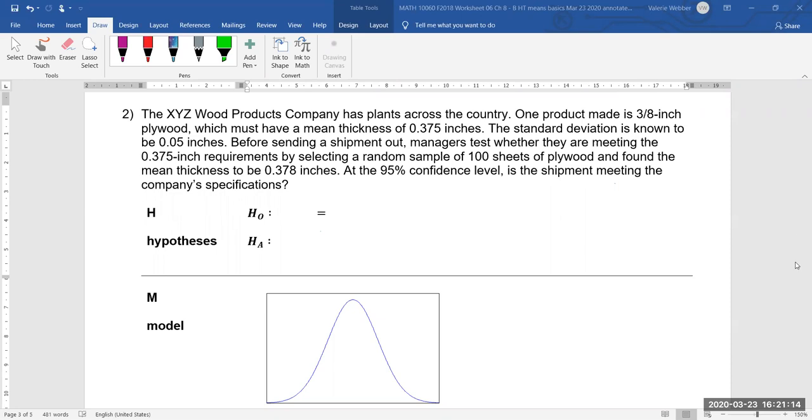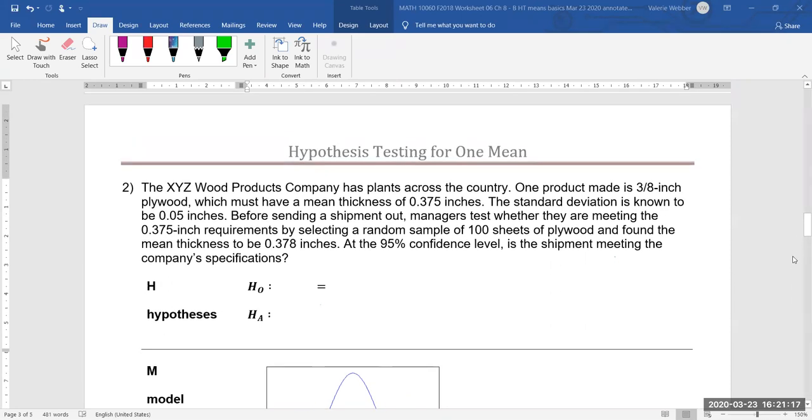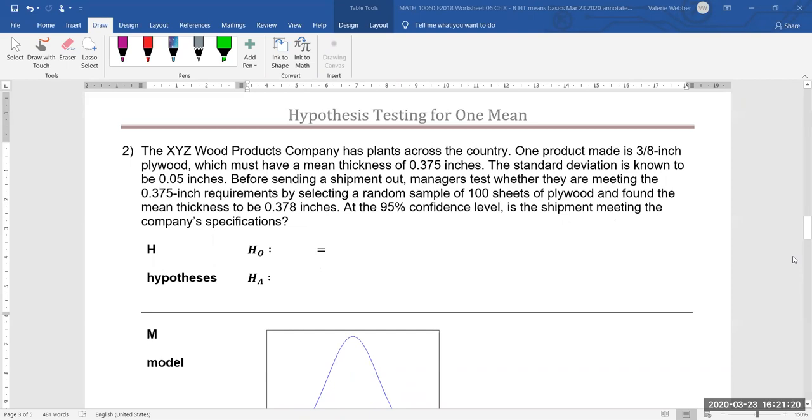Okay, so here's our second hypothesis testing for one mean problem from our worksheet. We have a scenario in which the XYZ Wood Products Company has plants across the country. They make a particular product which is three-eighths inch plywood, and it must have a mean thickness of 0.375 inches. The standard deviation is known to be 0.05 inches. Before sending a shipment out, managers test whether they're meeting the 0.375 inch requirements by selecting a random sample of 100 sheets of plywood, and they found the mean thickness to be 0.378 inches. At the 95% confidence level, is the shipment meeting the company specifications?